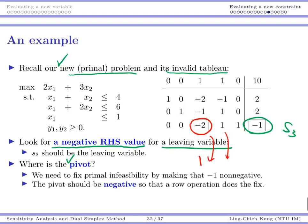You're going to change this guy into one, this guy to be negative one-half, this guy to be negative one-half, and this guy to be one-half. Only if you choose a number here which is negative, then after you do this elementary row operation, you are going to fix the right-hand side value to be positive. So we need to fix your primal infeasibility: the pivot must be a negative number so that the row operation fixes the bug.